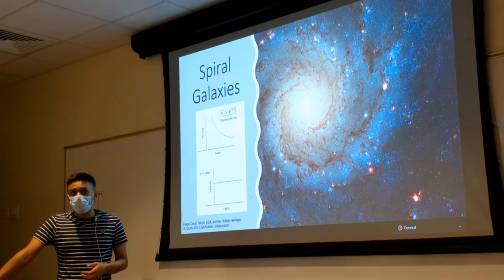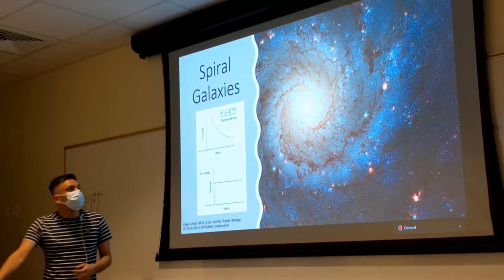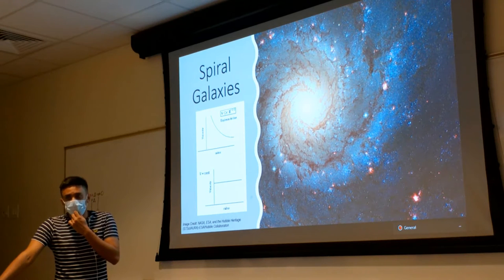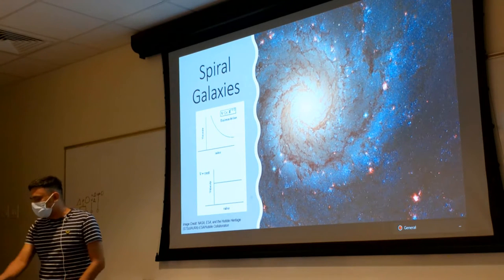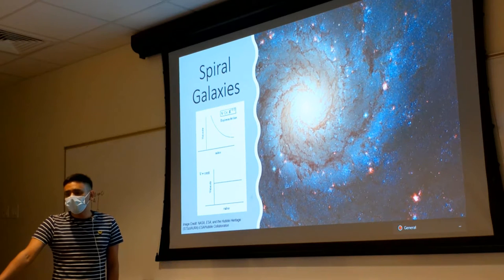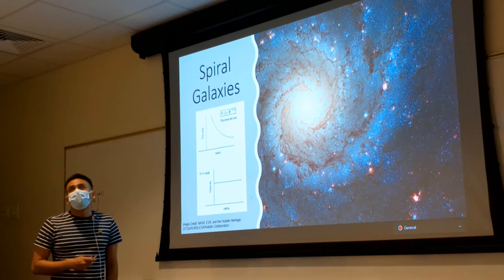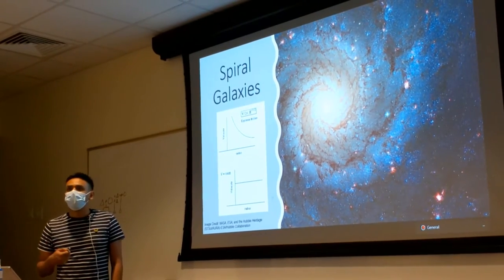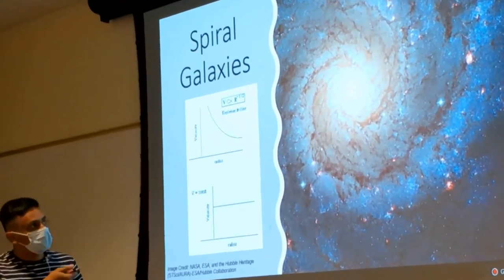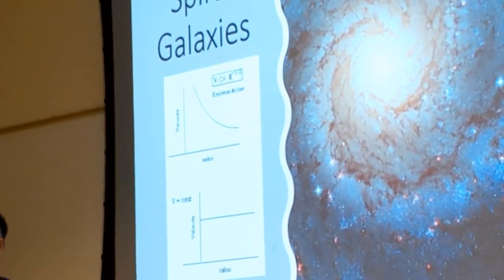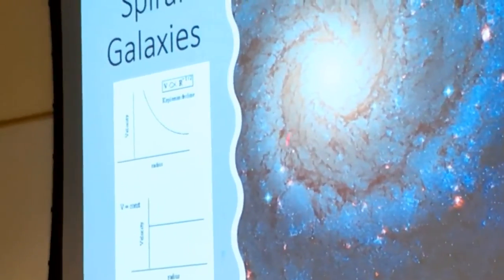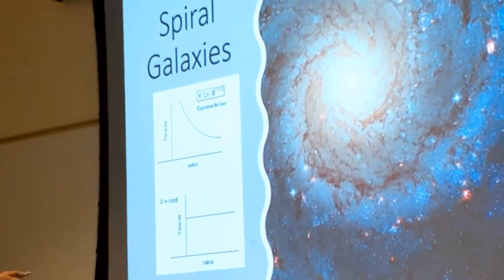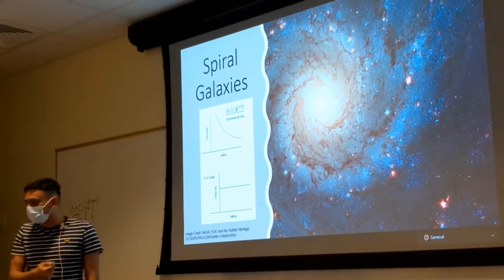Ford and Vera Rubin, in the 1970s, were looking at spiral galaxies and found another similar discrepancy. Spiral galaxies have a spherical bulge at the center — like a sunny-side-up egg on both sides — with spiral arms that rotate around the galaxy center. From luminosity observations, you can see that most of the mass is at the center. This spherical center and the distribution allow you to model the system like our solar system.